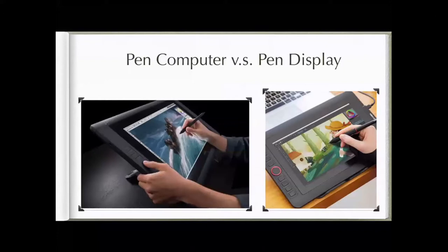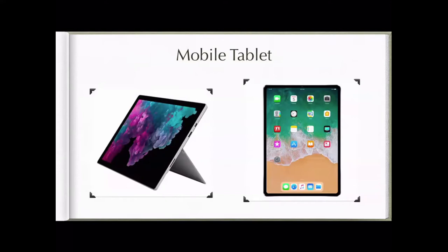A pen display must be connected to a computer to work — it's basically a second screen and doesn't work independently. A pen computer, on the other hand, is a standalone device that can run programs and browsers on its own. A mobile tablet is more portable than the standalone — you can take it on the go, similar in size to a regular notebook.